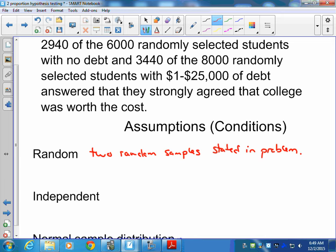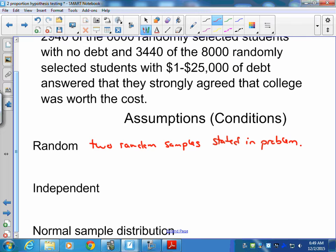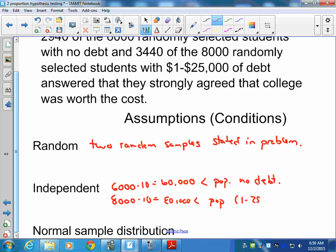So we verified that first assumption. Remember when we talk about independence, sample size times 10: is your sample smaller than 10% of the population? So we use our 10n calculation. For our first one, 6,000 times 10 equals 60,000, which would be less than the population of alumni with no debt. Then we have to look at our second group. Sample size of 8,000 times 10 is 80,000, which is less than the population with $1 to $25,000 of student loan debt. So we have independent samples.